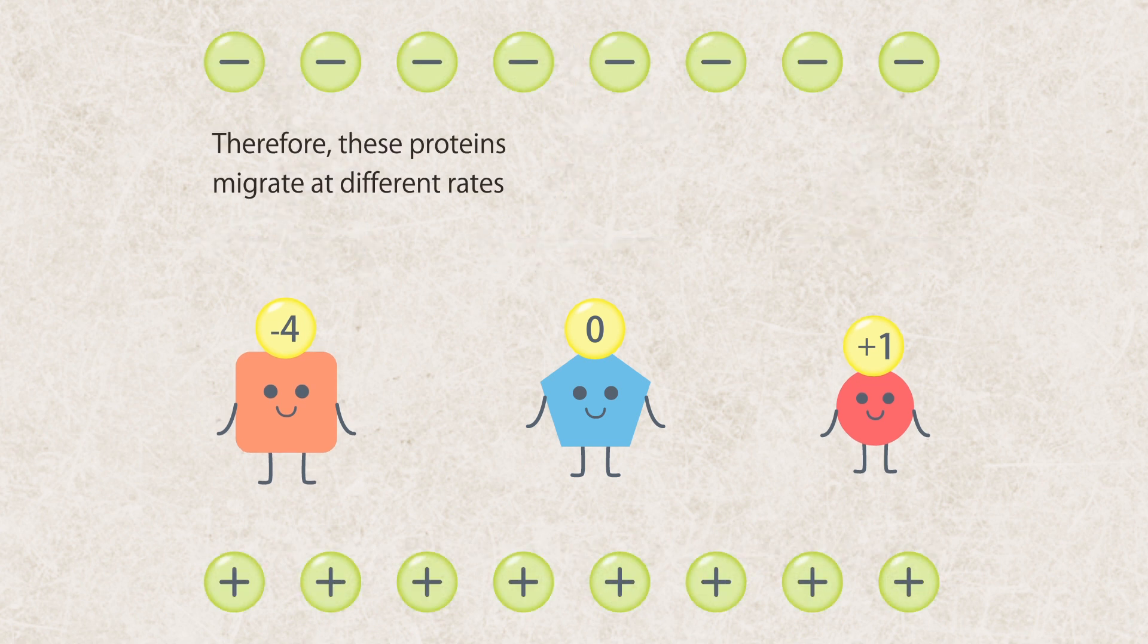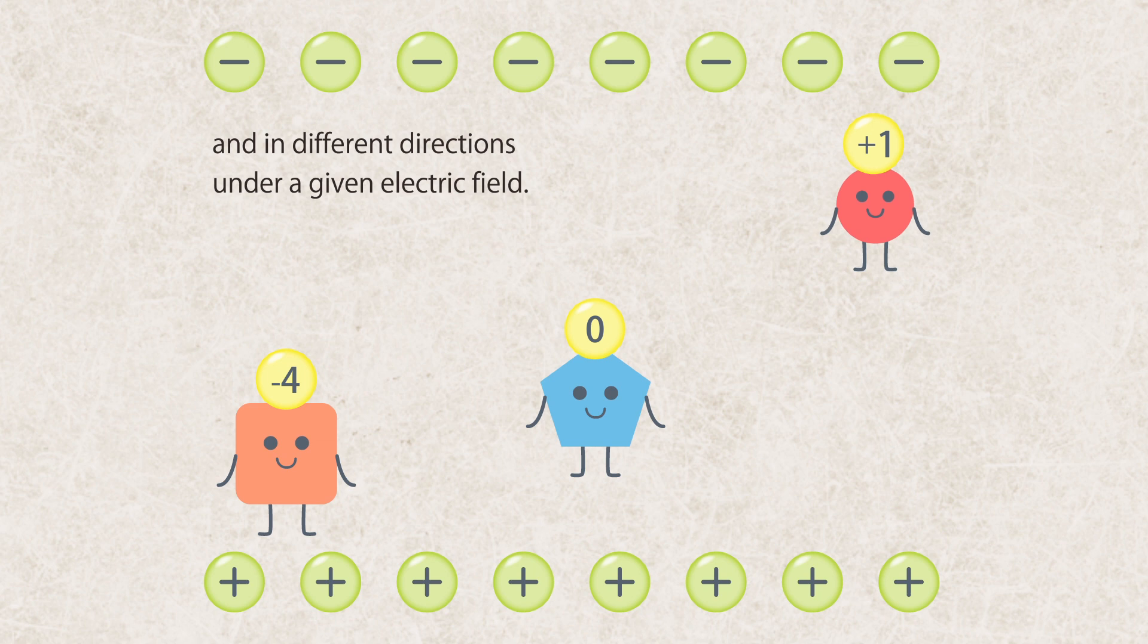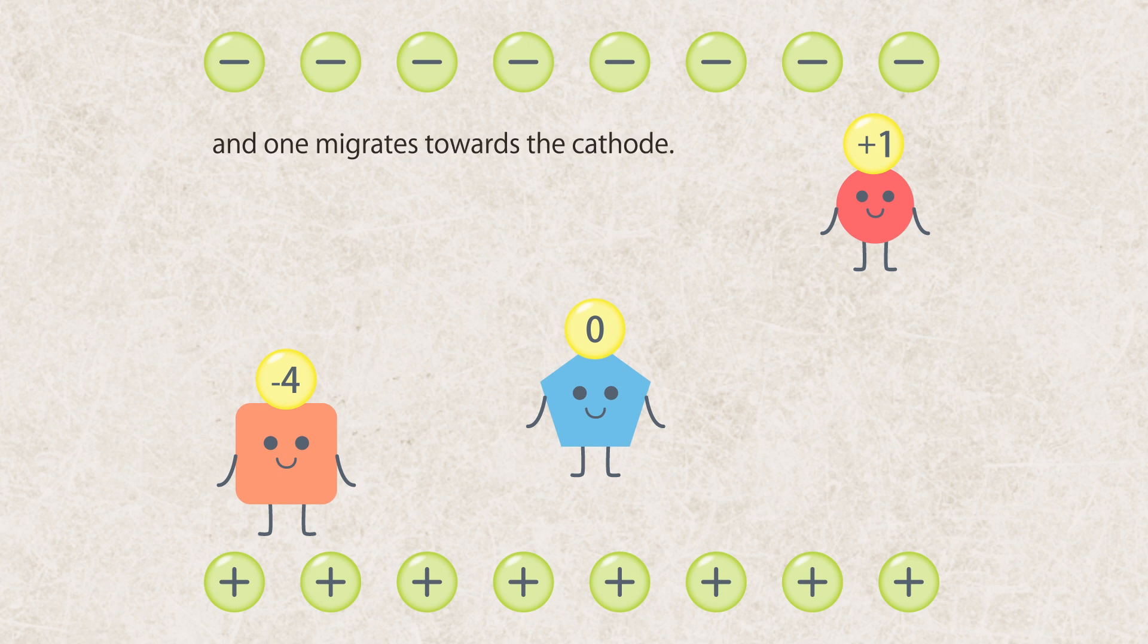Therefore, these proteins migrate at different rates and in different directions under a given electric field. One runs towards the anode, one doesn't move, and one migrates towards the cathode.